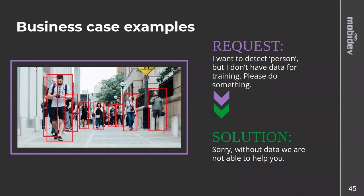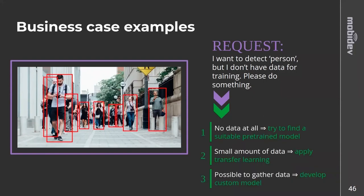For a business case: if a client asks you to detect persons but has no data for training, the answer isn't simply 'we can't help.' Instead, guide them: if they have no data at all, try to find a suitable pre-trained model. If they have a small amount of data, try to apply transfer learning. If it's possible to gather a lot of data, you can develop a custom model. Try to give the client options.